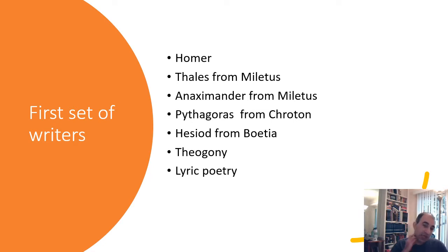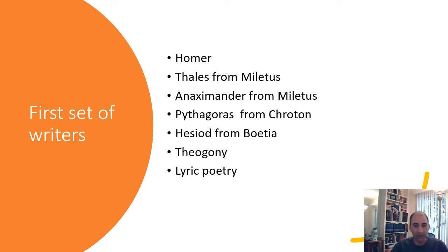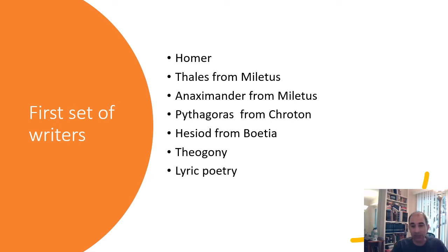We'll start with Homer, who wrote the Iliad and the Odyssey - mentioning him as one of the earlier writers in the Greek world. Then we have Thales and Anaximander, both from Miletus. These two men are not writers - they're what we would call scientists today. Thales is sometimes known as the father of science, in the sense that he developed some very advanced early ideas of science.